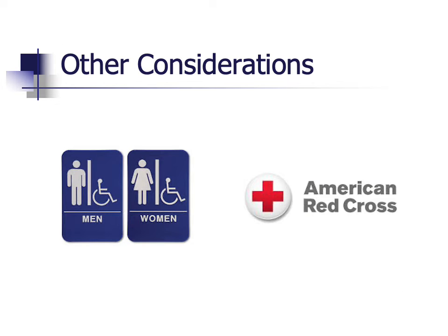There are several other considerations we need to be aware of. We're going to need restrooms and must be aware of gender identity issues in that regard. We need to make sure we're caring for the disabled — the Americans with Disabilities Act requires us to serve them even in times of disaster. We may need help from the American Red Cross, but some of their workers and volunteers may not be able to help. During Winter Storm Uri in Texas in February 2021, volunteers were not able to access shelters because of road conditions. We have to keep all of those contingencies in mind.